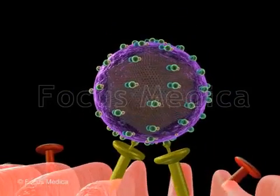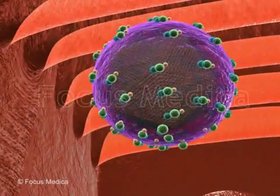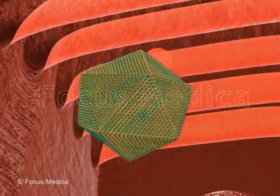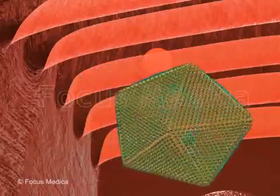The virion enters the cell by endocytosis, followed by uncoating and release of the nucleocapsid into the cytoplasm.